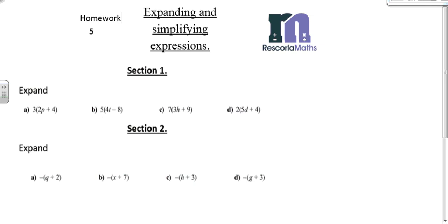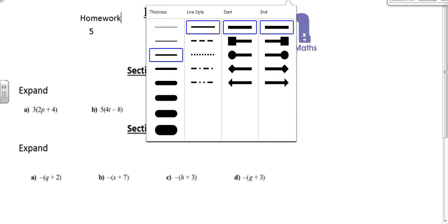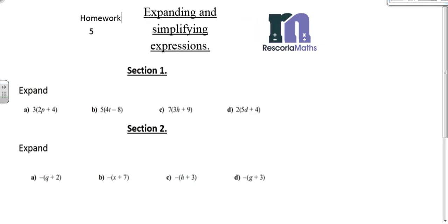The homework this week was all about expanding and simplifying. Looking at the first one, we do 3 lots of 2p, which is 6p. 3 lots of 4 is going to be 12. Remember, we've got to do 3 lots of the first thing and 3 lots of the second thing.